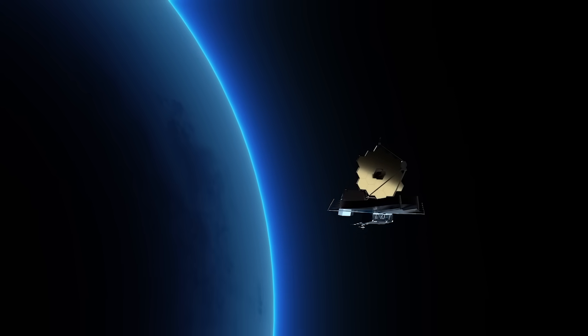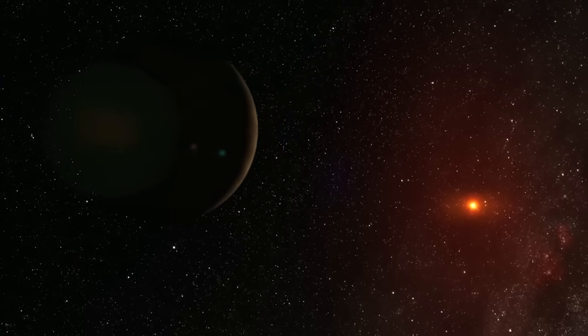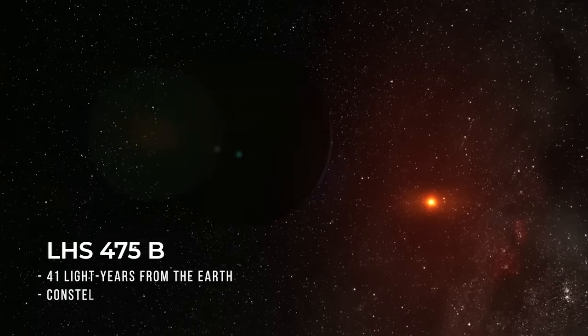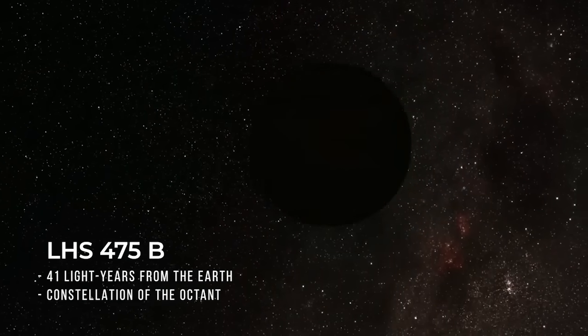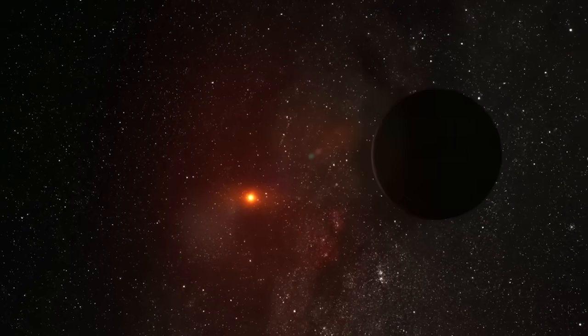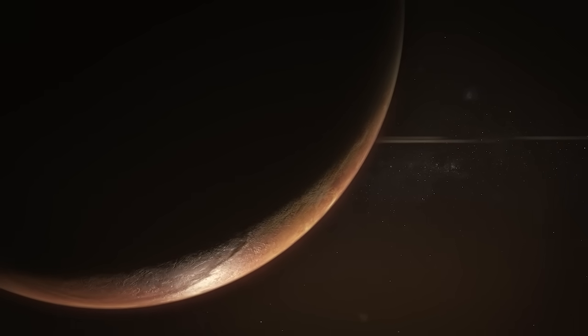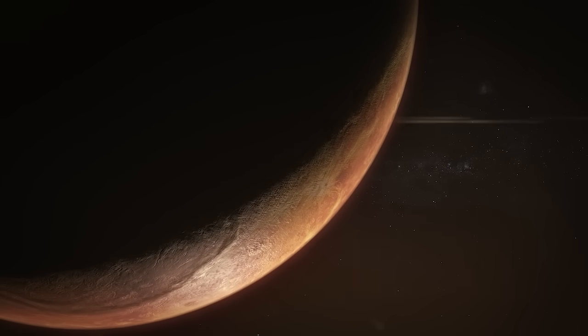More recently, the James Webb Telescope has confirmed the presence of a rocky exoplanet, LHS 475 b, 41 light-years away. This exoplanet has many similarities with the Earth. It could have an atmosphere, and it is 99% the diameter of the Earth.